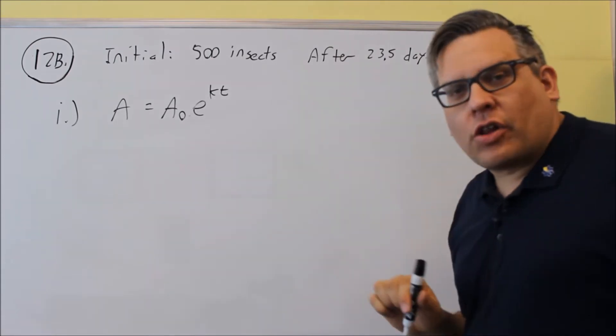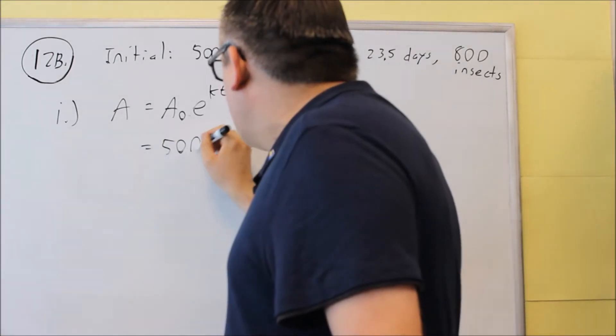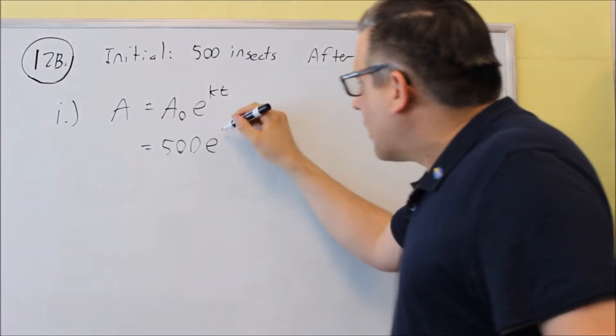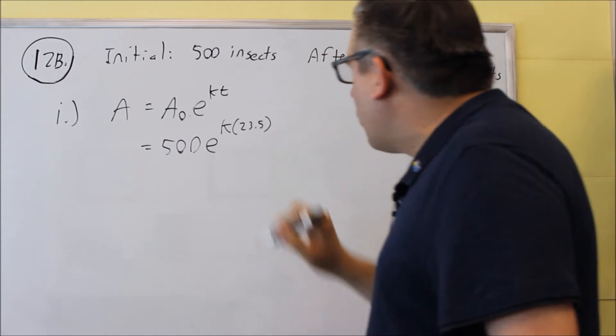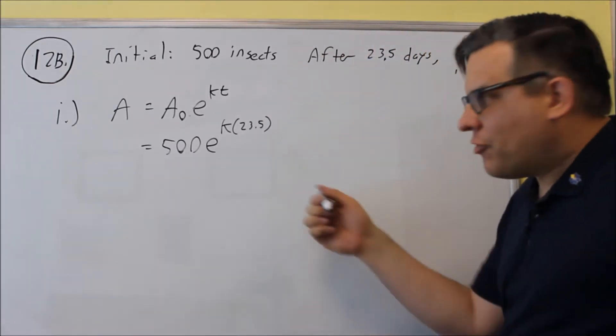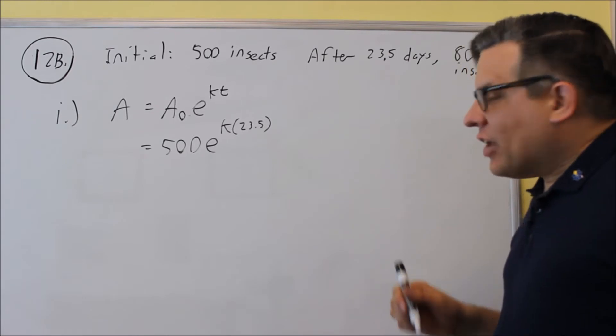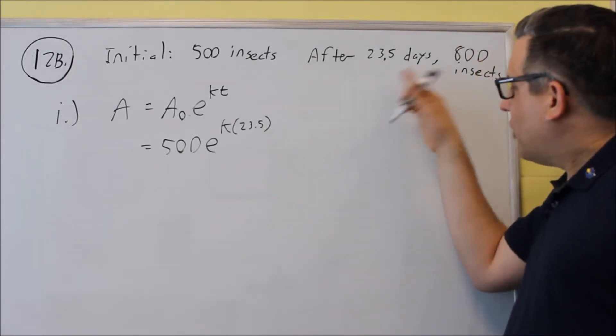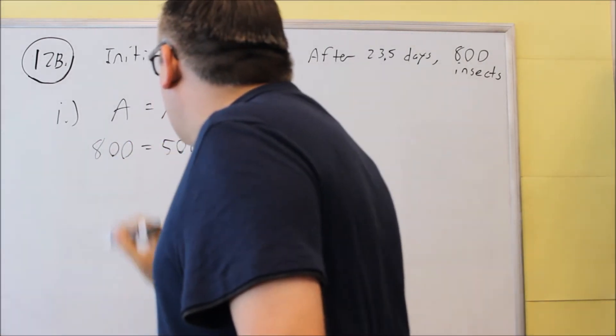And we can do that by plugging in all the given information. So, 500 insects would be the initial amount, the K is what we're trying to solve for, and 23.5 is what we're going to put in this time for the time, that's in terms of days. Then after the 23.5 days, it grows to 800 insects, so we put 800 in over here.